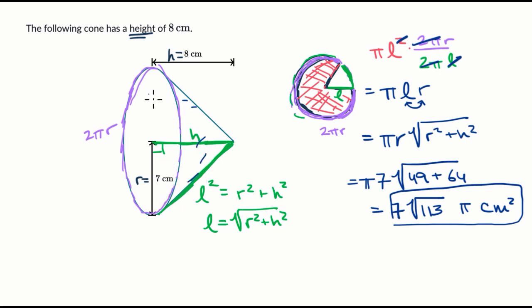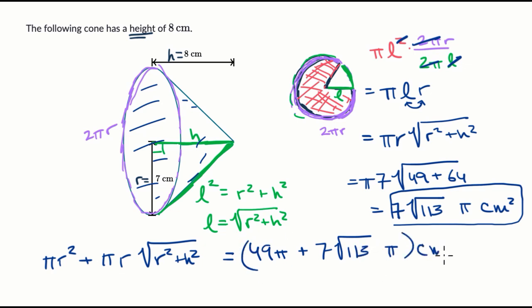And then if you wanted the total surface area, you just have to add the area of the base, and we've done that for many, many years. The area of this base is just pi r squared. So if you wanted the total surface area of a cone, it would be the base pi r squared, plus the lateral surface area, I could use this formula or that top one, pi r times the square root of r squared, plus h squared. In this case, r squared is 49, so it'd be 49 pi, plus all this business, which we already figured out, plus seven times the square root of 113 pi square centimeters.